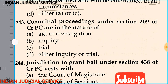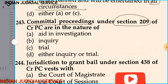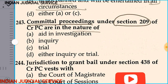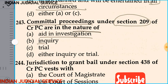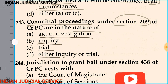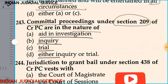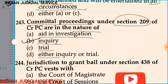Question number 243: The committal proceedings under section 209 of CrPC are in the nature of — option A: investigation, option B: inquiry, option C: trial, option D: either inquiry or trial. It is clear that this is an inquiry, where the committal magistrate delivers the case to the session court under section 209. The answer is option B: inquiry.